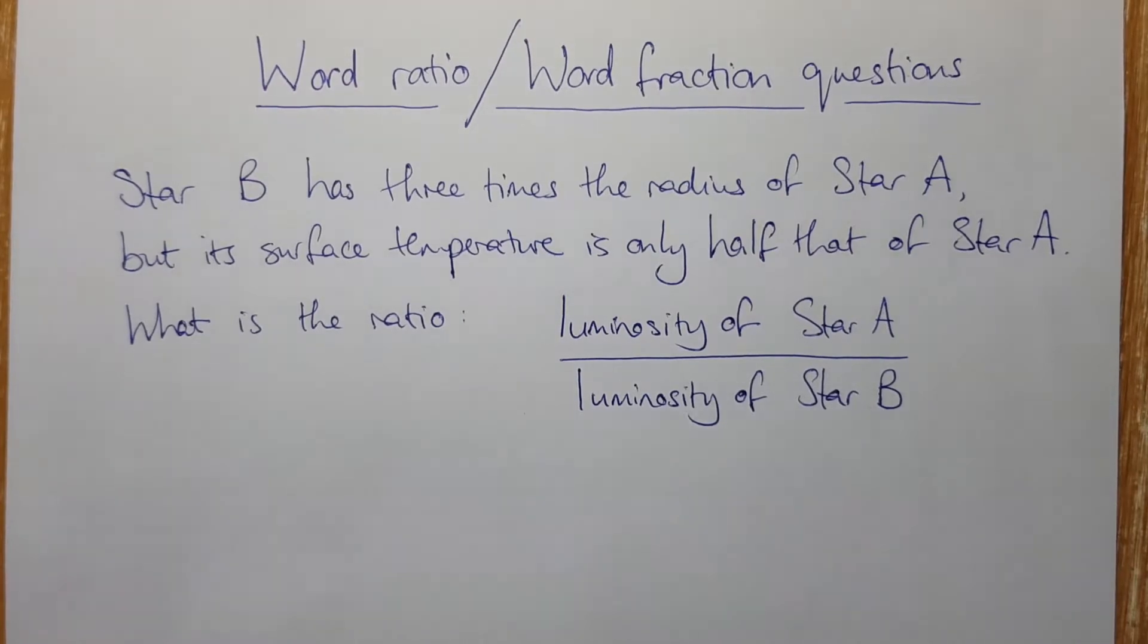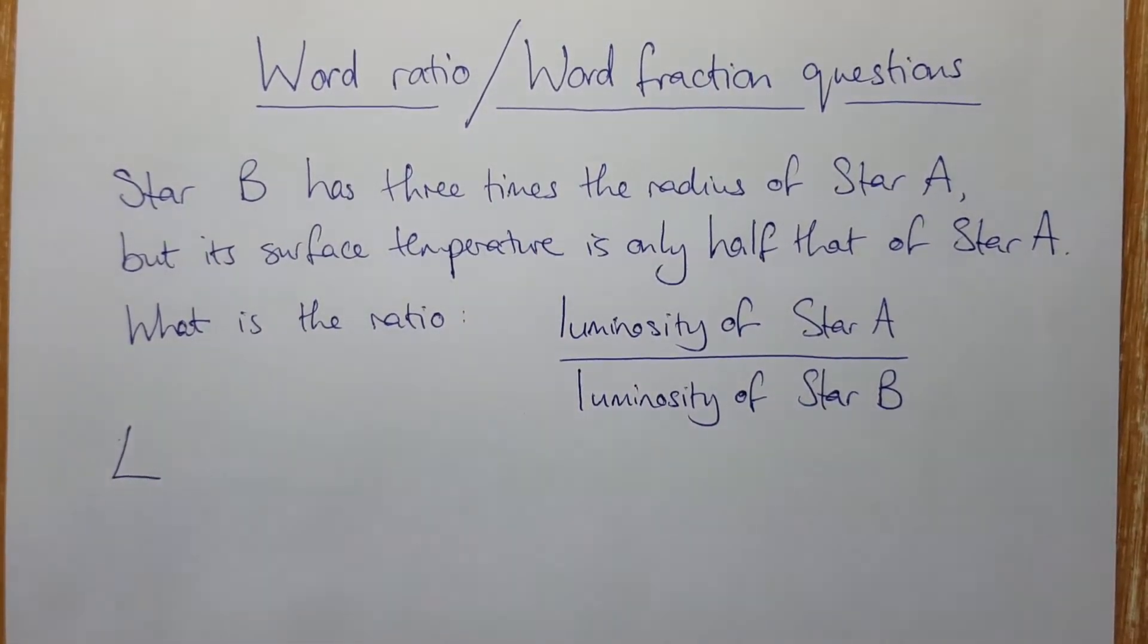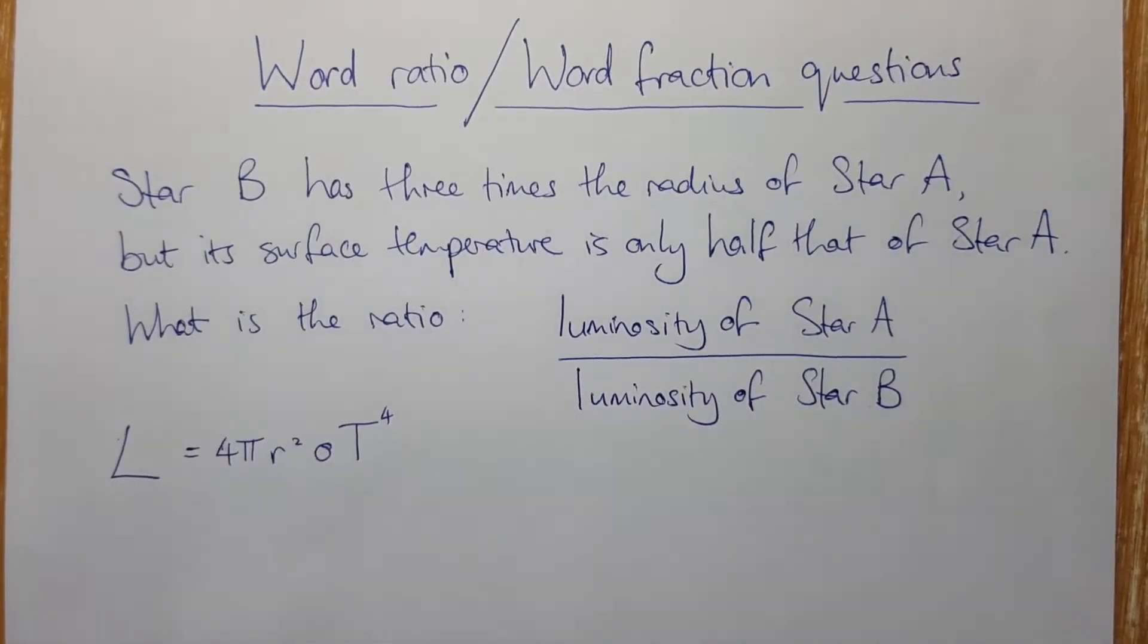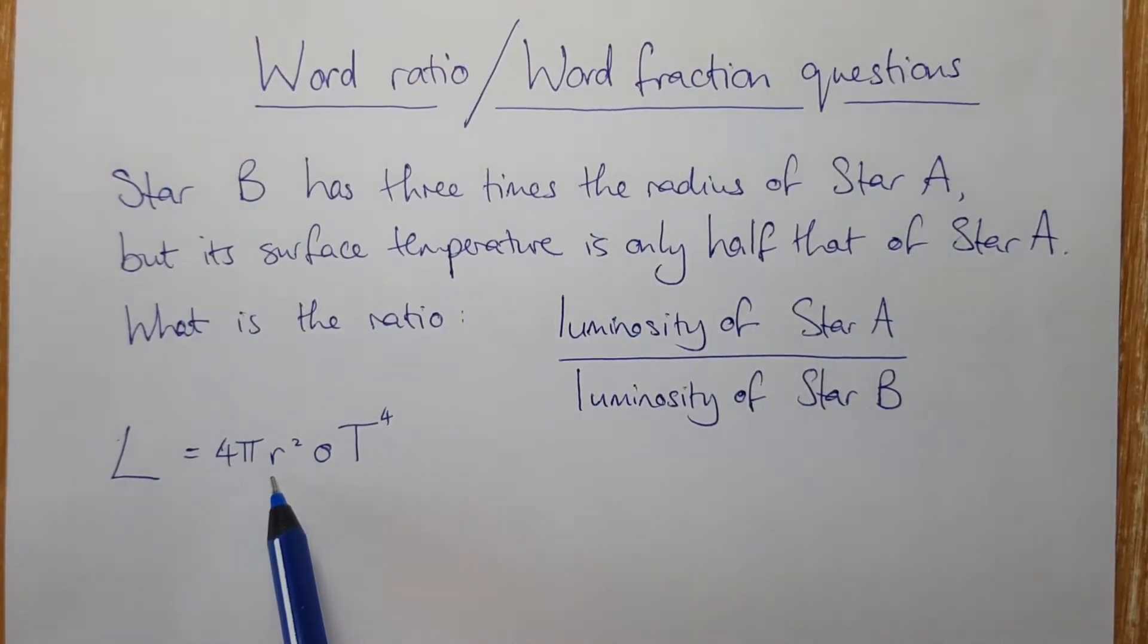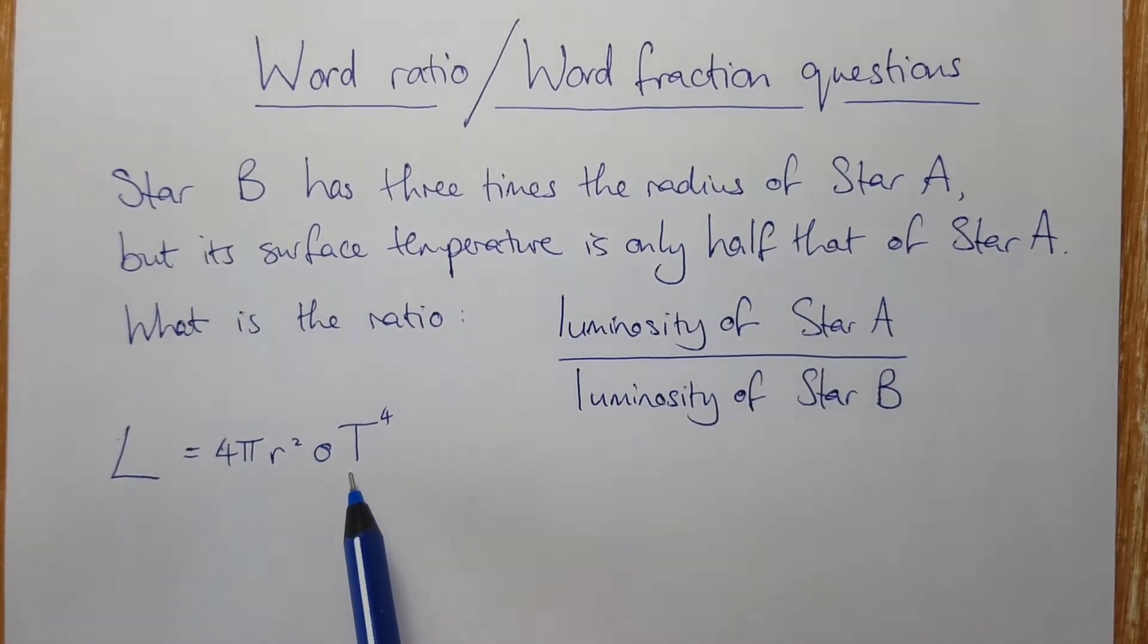Okay, so the first thing that you do is you identify the formula for whatever it is in the fraction. So in this case, it's luminosity of a star. So that's four pi times the radius of the star squared times the Stefan constant times the fourth power of the temperature of the star in Kelvin.